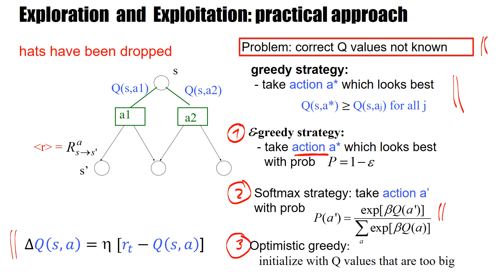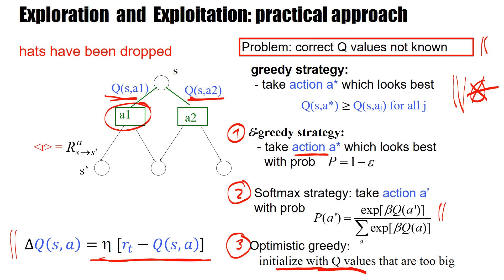There's a third strategy called optimistic greedy, which has a completely different philosophy. You play greedy — you take the action predicted by greedy — but you play a trick: you initialize Q values at a value that is way too high. Suppose you know the reward is between 0 and 1, so Q values should also be between 0 and 1. However, you initialize with Q equal to 10. Then whatever action you take, you're bound to find something that goes down, because R is between 0 and 1 while Q starts at 10, so the update is always negative and Q moves downward. Therefore, at the beginning you balance out all possible actions more or less equally, and at some point — depending on the parameter eta and your initial Q value — you start to play more greedy.